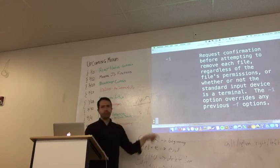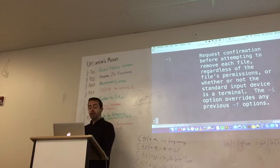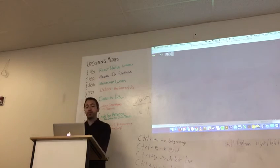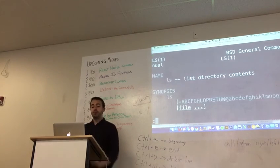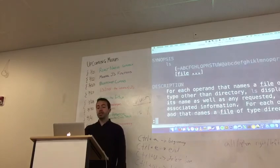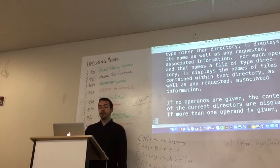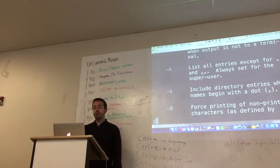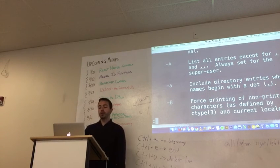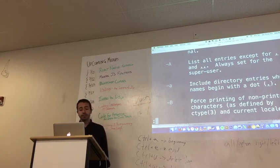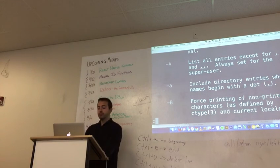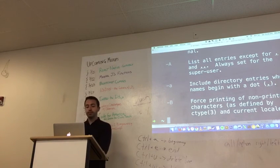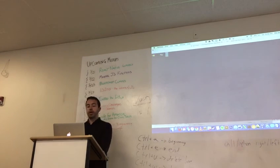How do you get out of this, by the way? I can control C. I can also press Q. Q will get out of that. So I type in man ls. I can get through. Press enter a bunch. I can start finding information about the flags. You can see all sorts of things with ls. Ooh. Include directory entries whose names begin with a dot. Cool.